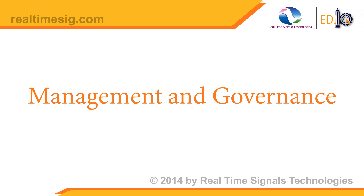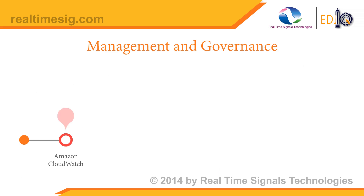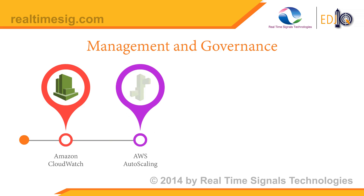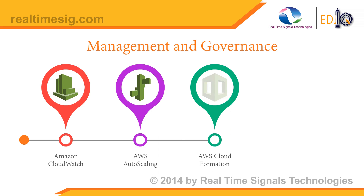Management and Governance: Amazon CloudWatch is a monitoring and management service built for developers, system operators, site reliability engineers, and IT managers. Auto Scaling helps you ensure that you have the correct number of Amazon EC2 instances available to handle the load for your application — at peak hours, the number of instances automatically increases, and vice versa.